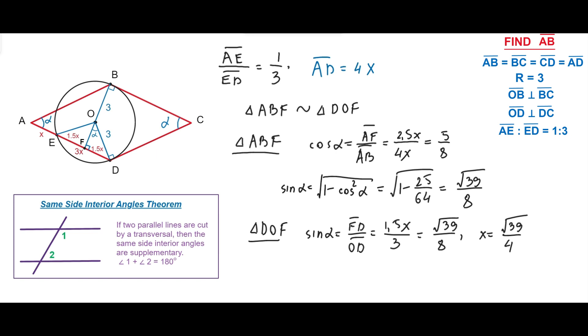We can put the value of X in this formula and finally get the answer. The side of the rhombus equals 4X equals square root 39 which is approximately 6.25.